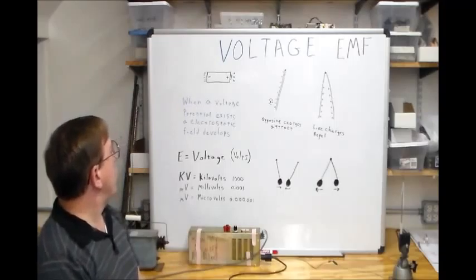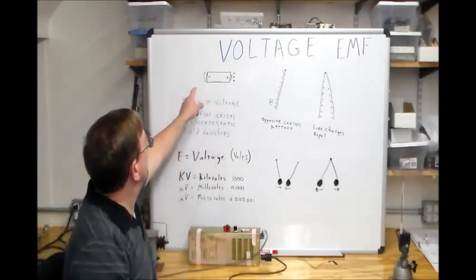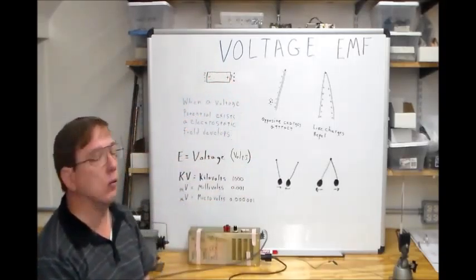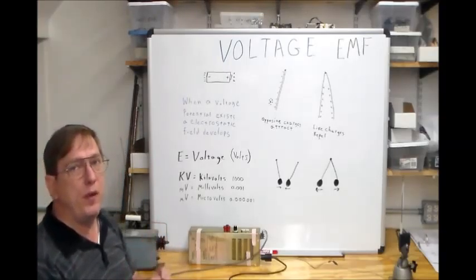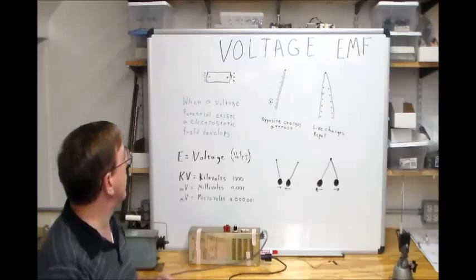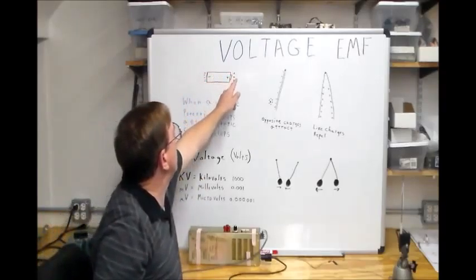So, if you have your basic battery right here, 1.5 volt cell, when you have a voltage present, a field, an electrostatic field develops around it. A battery will have a weak field develop around it, but it's actually measurable.